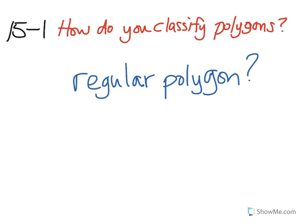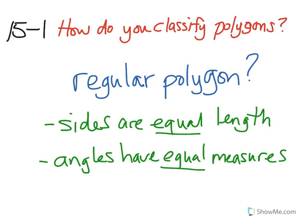The last thing we need to discuss is the term regular polygon. So now we know what a polygon is and what a polygon is not. So what is a regular polygon? A regular polygon has sides that are all of equal length, and therefore the angles are all going to have equal measures. That's what makes a polygon a regular polygon.